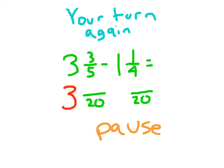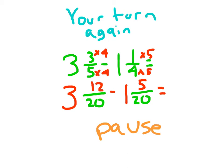The whole portions stay the same — it's the fractional parts we have to convert. For one and one-fourth, we multiply by five in the numerator and denominator to get twentieths: one times five is five. For three-fifths, we multiply by four: three times four is twelve. So twelve-twentieths minus five-twentieths is seven-twentieths, and three minus one is two. Our answer is two and seven-twentieths, which is in simplest form — seven is a prime number and twenty is not divisible by seven.